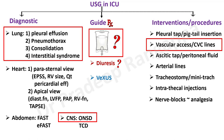For CNS, we do optic nerve sheath diameter and transcranial Doppler, which I'll touch on for physicians. For interventions, you can see a whole list: pleural tap, pigtail insertion, vascular access, CVC lines — all of these today have to be performed under ultrasound guidance, and it's considered malpractice if any procedure is done without ultrasound.